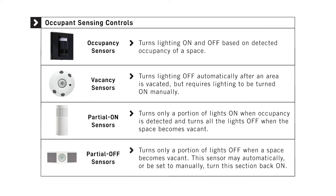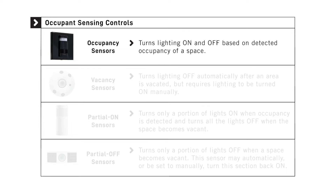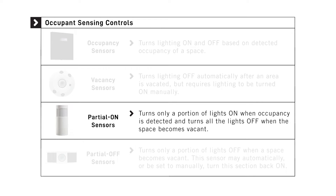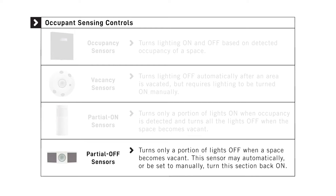Occupant sensing controls include occupancy sensors used to turn lighting on and off based on detected occupancy of a space; vacancy sensors used to turn lighting off automatically after an area is vacated but requiring lighting to be turned on manually; and partial-on sensors, which turn only a portion of the lights off when a space becomes vacant. The sensor may automatically turn this same portion back on, or the system may be set so that manual on control is required.